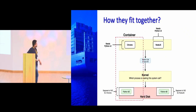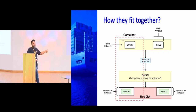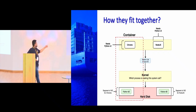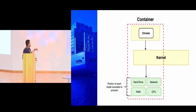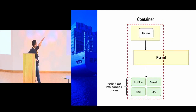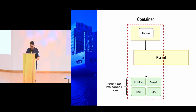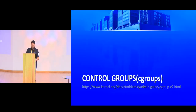Suppose you have two applications, and both require different Python versions. In a system without virtual environments, you can't have two versions of Python running at the same time. With the help of containers, you can do this. The dotted line represents a container boundary. When we zoom in, this is the view which the container sees — it sees it has its own application, kernel, and resources.